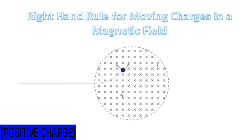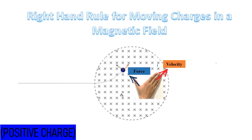Let's check the direction of the magnetic force at another point along the path. Fingers follow the direction of the red arrow — the velocity — and your thumb shows the magnetic force 90 degrees to the fingers. The charged particle will continue to deflect because it is pushed by the magnetic force, and it will make a circular path as long as there is a magnetic field.